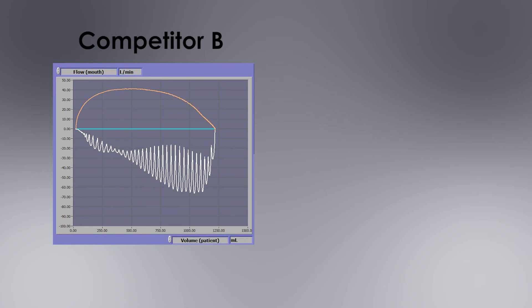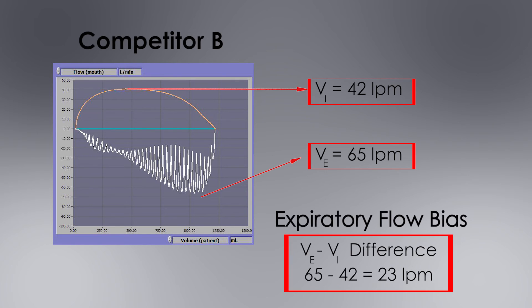Now looking at the flow loops generated by the other OPEP device, competitor B, the peak expiratory flow is 65 liters per minute. The peak inspiratory flow is 42 liters per minute. So the difference is 23 liters per minute.